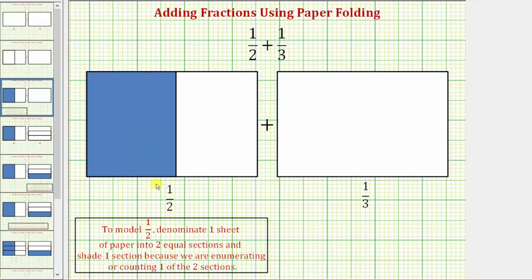Now to emphasize the vocabulary of a fraction — remember the top number is the numerator and the bottom number is the denominator. So it's also correct to say, to model one-half, we denominate one sheet of paper into two equal sections and shade one section, because we are enumerating, or counting, one of the two sections.